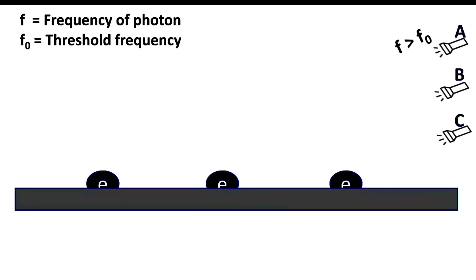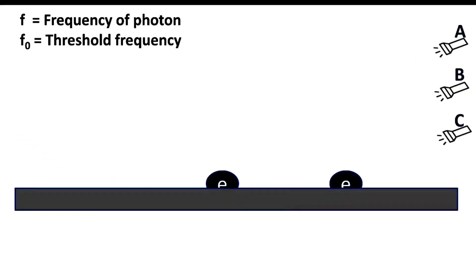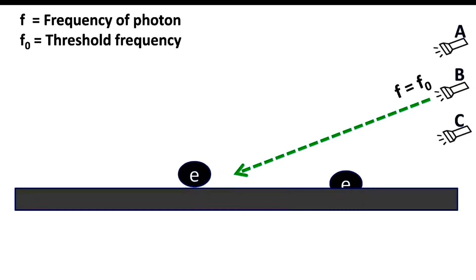Such photons from source A can easily knock out the electrons from the surface of the material. Photons from source B have a frequency equal to the threshold frequency. Such photons are just able to eject out the electrons from the surface of the material but do not have sufficient energy to knock them out.